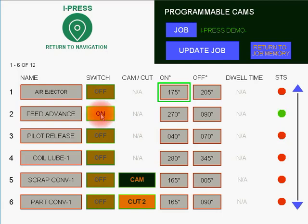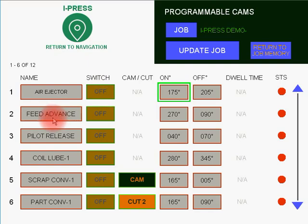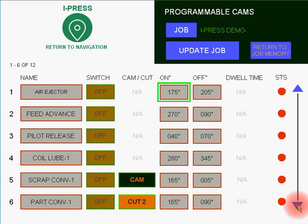You can turn the cams on or off. In this case we've got the cams named as if the press had been installed: air ejector on/off for blowing the parts out, feed advance for when you want the material to progress, pilot release for when you want the feed rolls to open, coil lubrication, scrap conveyor on, scrap conveyor off, part conveyor on, part conveyor off.